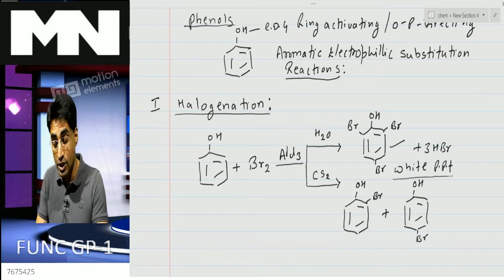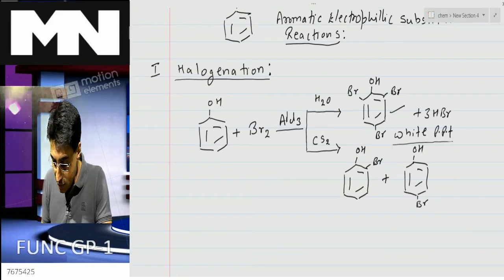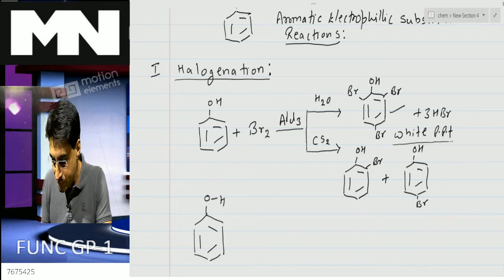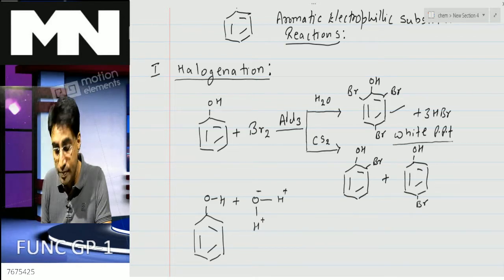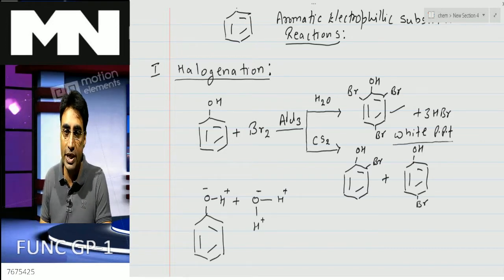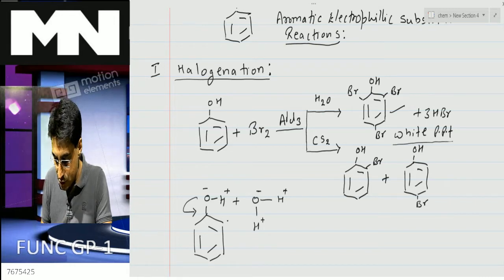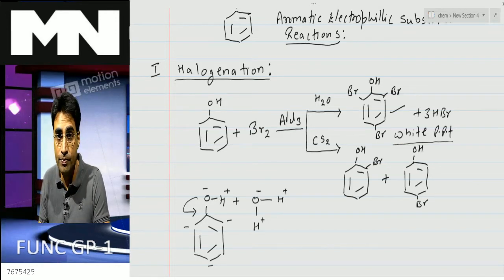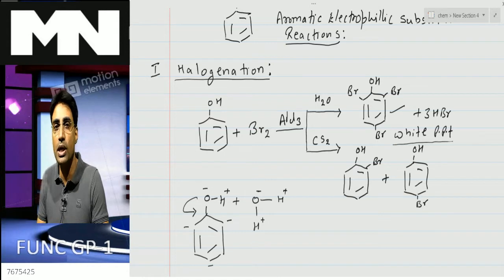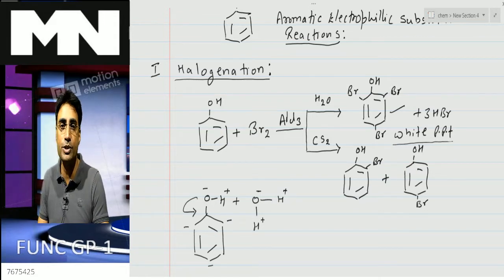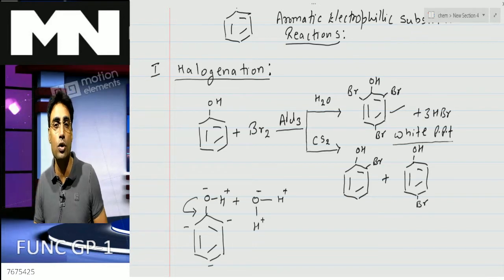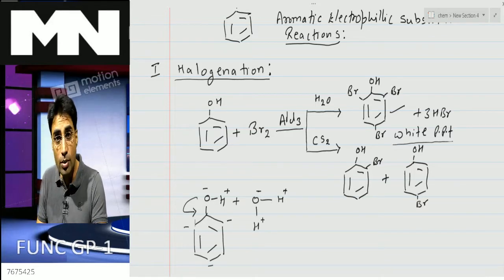Why does water give tribromophenol whereas carbon disulfide gives monobromophenol? Water is a polar solvent with a dipole moment where H is positive and oxygen is negative. This negatively charged oxygen induces a dipole in the O-H bond of phenol, making oxygen more negative, which causes it to donate lone pair electrons to the benzene ring, activating it toward electrophilic attack and leading to tribromophenol. Carbon disulfide is non-polar, so it cannot activate the benzene ring the same way, giving only monobromophenol - either ortho or para.